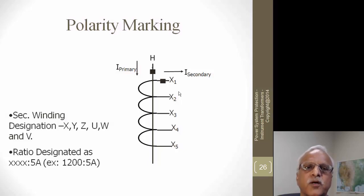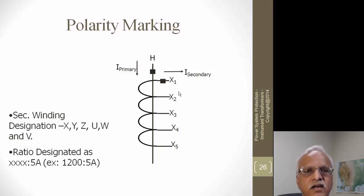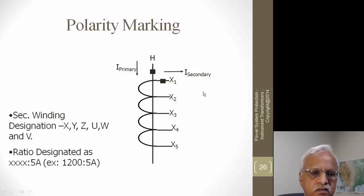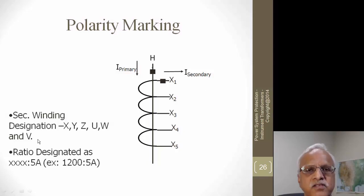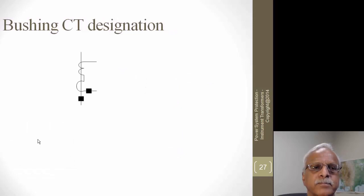Polarity marking is very important, especially for directional relays or bus protection where the sum of all currents must equal zero. The convention is: when current enters the polarity marking on the primary side, it leaves the polarity marking on the secondary side. Different designation numbers — H and X — are used, and for multiple CTs they are designated X, Y, Z, and W. In freestanding CTs with five or six cores, this labeling is used. Bushing CTs are also designated with the H marking as shown in the drawings.